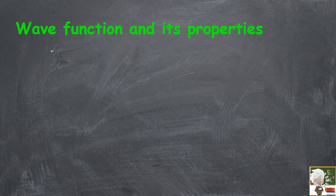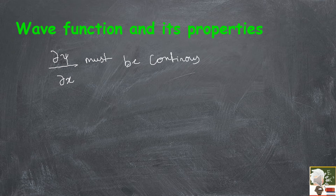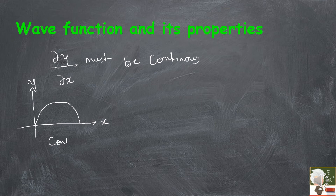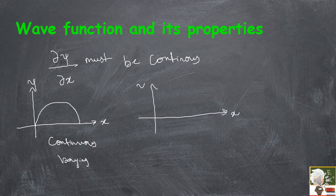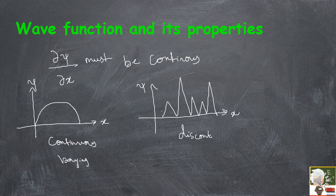Also, ∂ψ/∂x must be continuous. On the graph, if we take the slope at any point, it should be continuous. If the slope varies continuously, it is valid. But if there is a discontinuous function with sharp peaks, the slope will have sudden increases and sudden decreases. So your ∂ψ/∂x must be a continuous function.